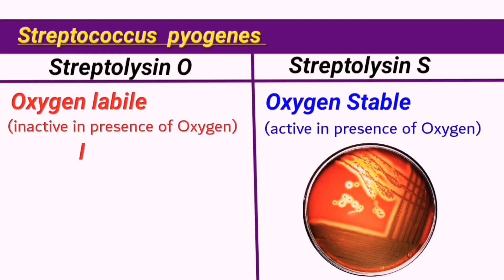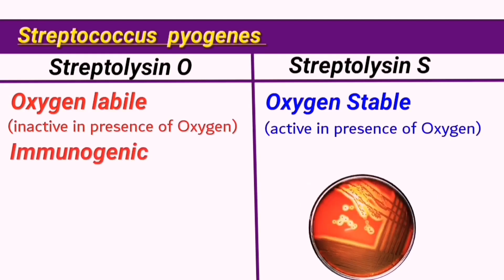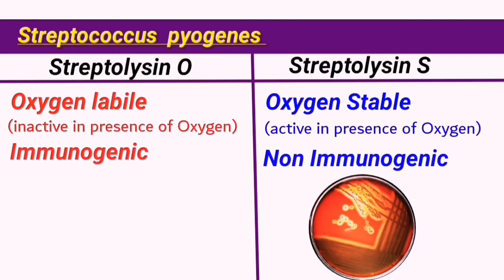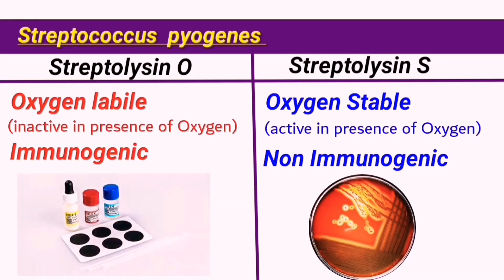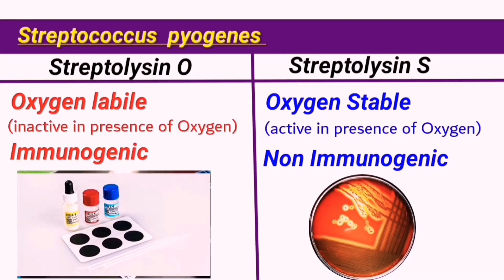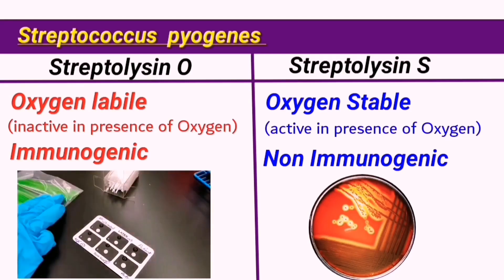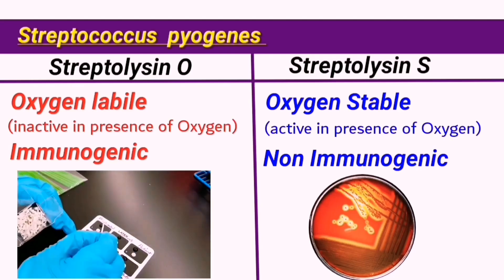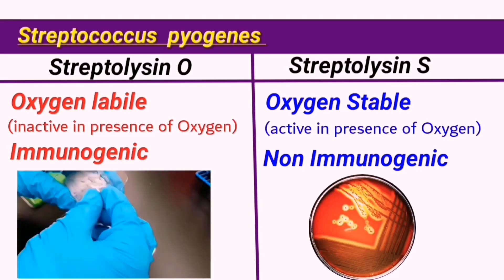Streptolysin S is therefore responsible for haemolysis on aerobic blood agar plates while O is inactivated by the oxygen present. Streptolysin O however is immunogenic while S is not. So in the laboratory we examine S. pyogenes for the presence of streptolysin O using the latex agglutination test, which is an antistreptolysin O titer test.